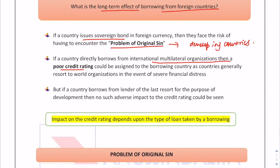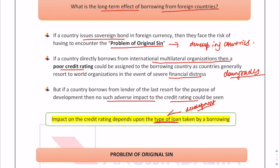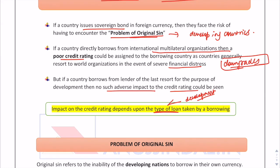If a country directly borrows from international multilateral organizations, the purpose of the loan is very important. If the loan is taken to address financial distress, a poor credit rating or downgrade could result. But if the loan is for development — for example, India's concessional loans from ADB and World Bank for the green energy sector — there will be no adverse impact on the credit rating. The type of loan determines whether the credit rating goes down or not.